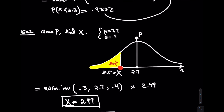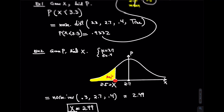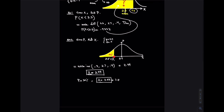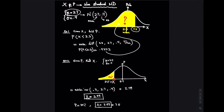These are the two calculations for a non-standard normal distribution. If given x and asked for p, use the NORM.DIST command. If given p and asked for x, use the NORM.INV command. There are a few different ways each problem could be presented, and we'll cover those in the next video lecture.